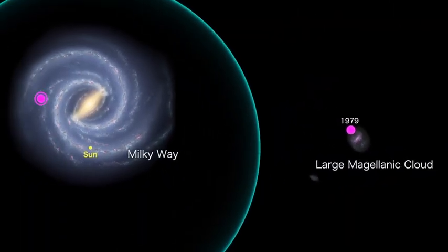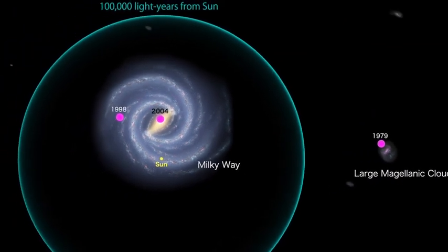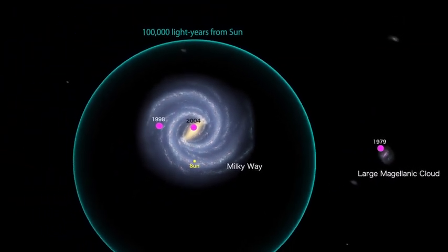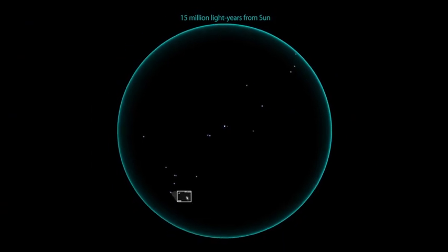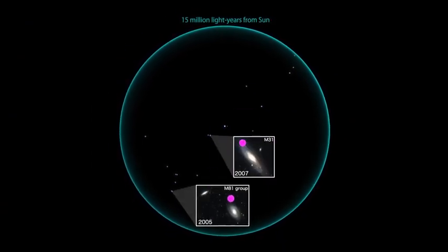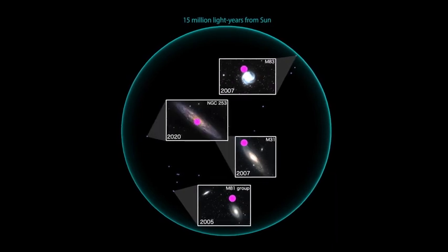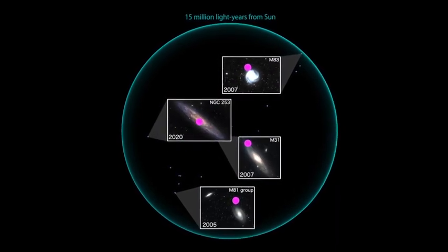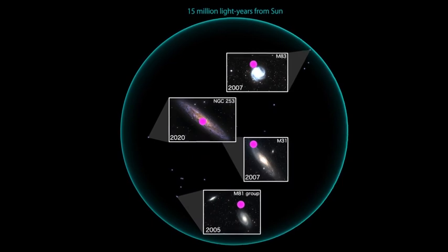This fueled astronomers' growing suspicions that short GRBs associated with galaxies in our neighborhood might really be magnetar giant flares. Now, the precise localization of the 2020 event to the disk of the Sculptor galaxy has unmasked them at last.